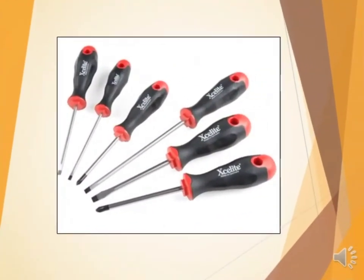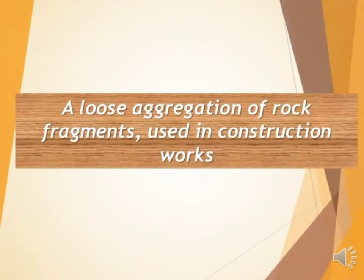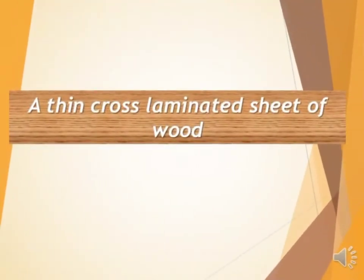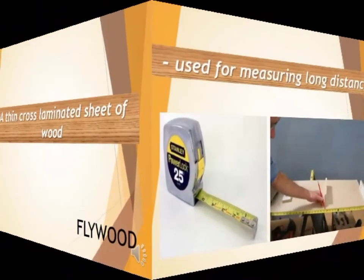Correct! This is called sand. How about this picture — what do you call this tool? Very good! This is a screwdriver. A loose aggregation of rock fragments used in construction works — what do you call this material? Correct! Gravel. A thin, cross-laminated sheet of wood — what do you call this material? Yes, it's called plywood.